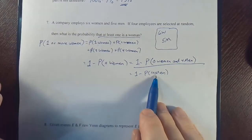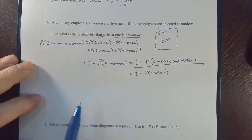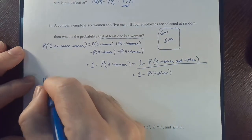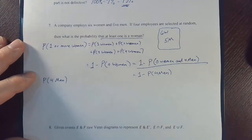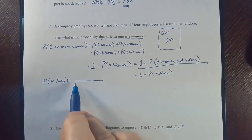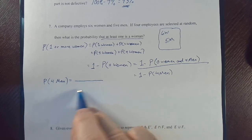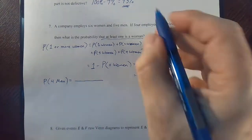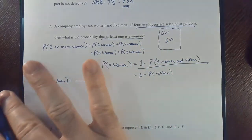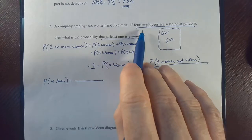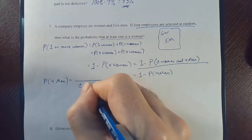Another way of saying that is simply one minus the probability of four men. So all we need to do is figure out the probability of getting all four men. The probability of four men is the number of different ways you can choose four men on top, over the total number of ways you could choose from the entire group as the denominator. If four employees are selected at random, the denominator needs to be the total number of possible outcomes — how many ways can we choose four people out of 11? That's 11 choose 4.